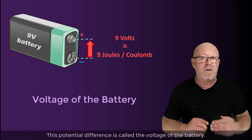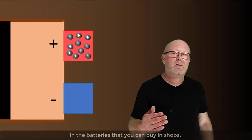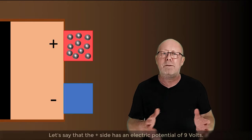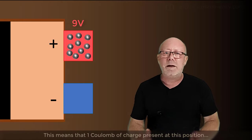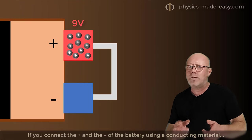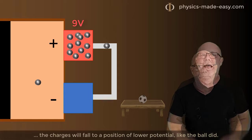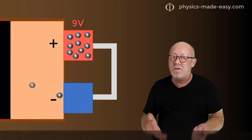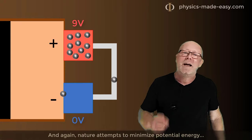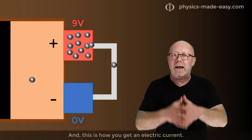This potential difference is called the voltage of the battery. On the plus side of the battery, positive charges are stacked together. In the batteries that you can buy in shops, it is a chemical reaction that provides the energy to stack the charges together like this. So let's say that the plus side has an electric potential of 9 volts — this means that one Coulomb of charge present at this position holds 9 joules of energy. If you connect the plus and minus of the battery using a conducting material, the charges will fall to a position of lower potential, like the ball did. The point of lowest potential is the other side of the battery, where one Coulomb of charge holds 0 joules and an electric potential of 0 volts. Nature attempts to minimize potential energy by letting the positive charge flow to a point of lower potential — and this is how you get an electric current.